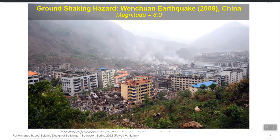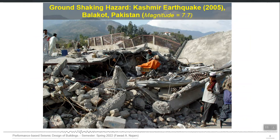You have seen these consequences of ground shaking hazard: the 2008 Wenchuan earthquake in China — you can see the destruction. Our own Kashmir 2005 earthquake, and this is a picture from Balakot. This is a tragic story associated with that figure: this house belongs to this person, and this picture was taken one month after the earthquake. He had nowhere to go, so he just started living on the rubble of his own house and carrying on his daily life there.